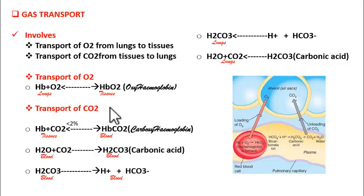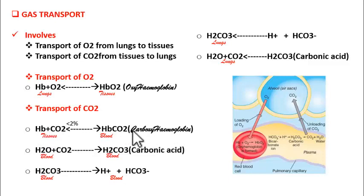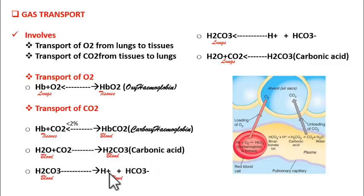Now let us look at transport of carbon dioxide. Less than 2% of carbon dioxide is transported like oxygen — carbon dioxide from tissues enters into blood and combines with hemoglobin to form carboxyhemoglobin (HbCO₂). The remaining carbon dioxide enters into blood plasma. This carbon dioxide reacts with water of the plasma to form carbonic acid (H₂CO₃). Being weak, carbonic acid dissociates to form H⁺ and HCO₃⁻ (bicarbonate) ions, and it is in this bicarbonate form that blood transports carbon dioxide to the lungs.